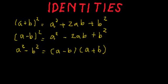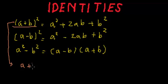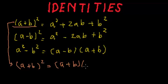Let's talk about the first identity, which is (a+b)². We'll start from the left-hand side and try to reach the right-hand side. The left-hand side is (a+b)², which means a+b multiplied by itself.